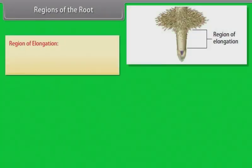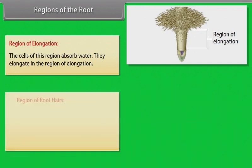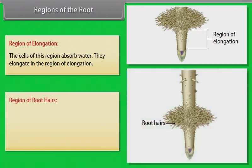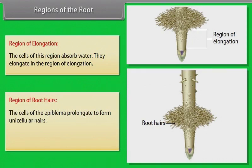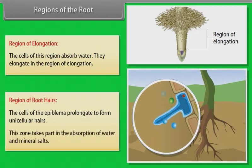Region of elongation: the cells of this region absorb water and elongate. Region of root hairs: the cells of the epiblemma elongate to form unicellular hairs. This zone takes part in the absorption of water and mineral salts.